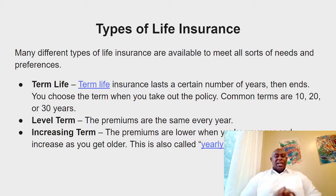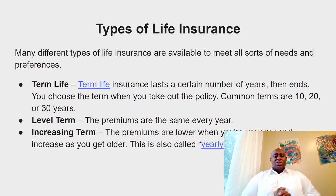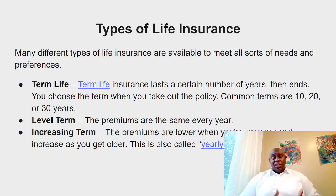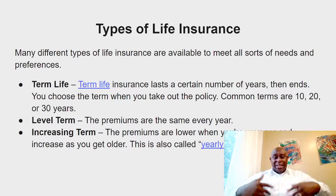The first is term life insurance. Term life insurance lasts a certain number of years — 10, 20, or 30 years — then it ends. It's similar to renting: it just stops. You choose the term length. There are many benefits to term life insurance, and if you need more explanation, comment below.